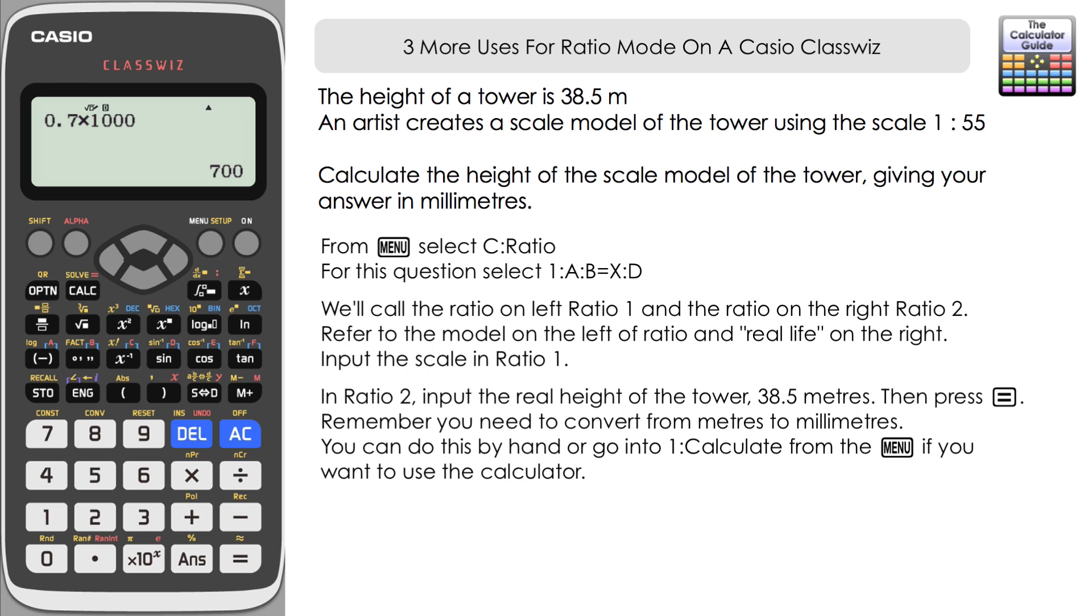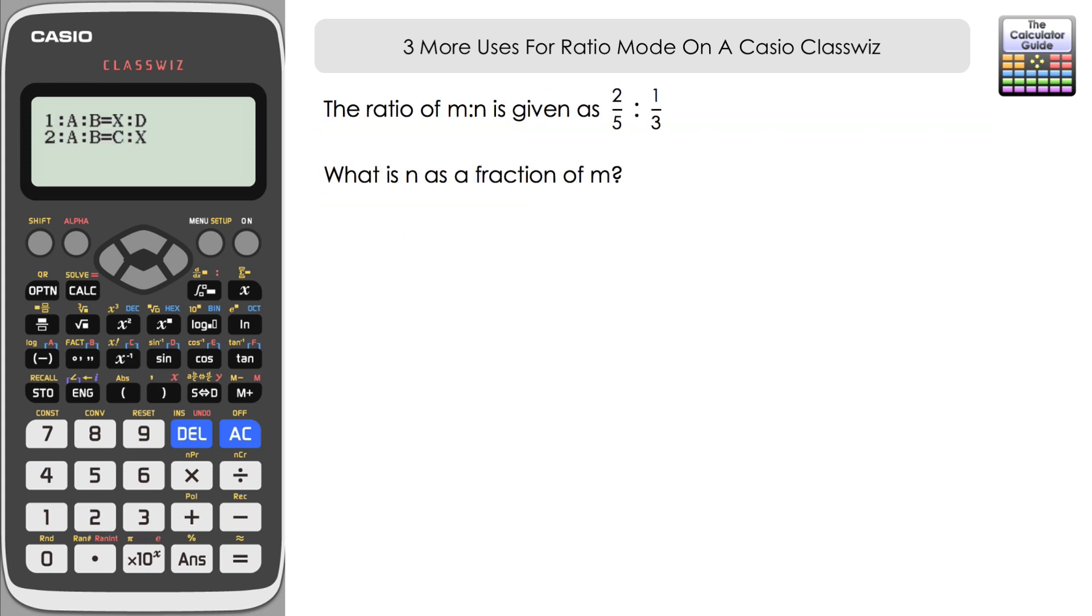Back to ratio mode again. We're going to have a look at this question here. The ratio of m to n is given as two-fifths to one-third. So a little bit unusual, a ratio here with fractions. And the question is what is n as a fraction of m?